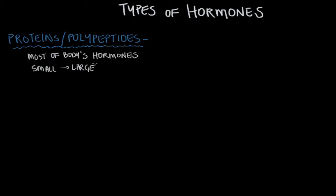Just as a frame of reference, one cell in your body has on the order of a trillion atoms inside it, and there are a hundred trillion cells in your body. So we're talking about very, very small things. Polypeptide hormones can range from these small collections of amino acids all the way up to hundreds and hundreds of amino acids, so they can get quite large.